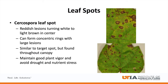The third disease in the leaf spot complex is Cercospora leaf spot. Lesions start as reddish small lesions and then slowly turn white to light brown in the center. If lesions are large enough, they can form concentric rings similar to another foliar disease, target spot. The main difference in Cercospora leaf spot is that it is found throughout the canopy. Maintaining good plant vigor with irrigation and proper fertilization can help prevent it. The leaf spot complex of diseases can be present together when cotton is drought and nutrient stressed, and rarely do they cause yield loss, but sometimes they can be mistaken for other more damaging diseases.